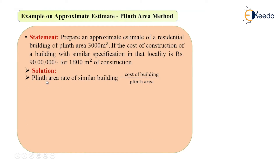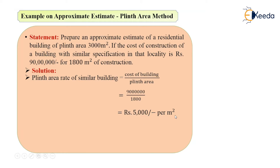First, I will calculate the plinth area rate of the similar building. The formula is: cost of building divided by plinth area. Cost of building is Rs 90 lakh, divided by the plinth area of the existing structure which is 1800 meter square. This gives a value of Rs 5000 per meter square.